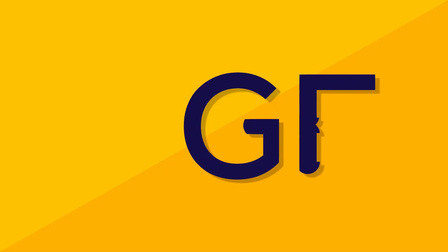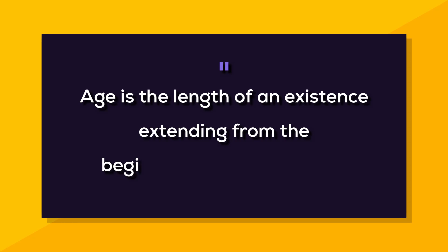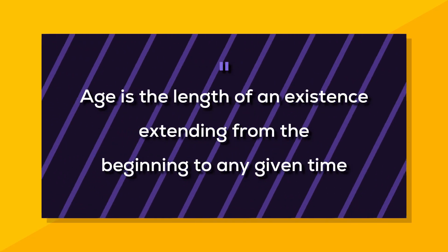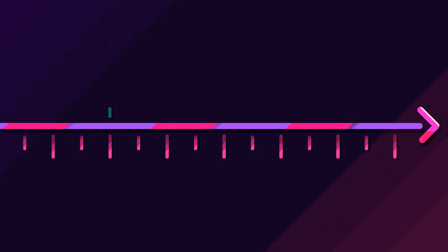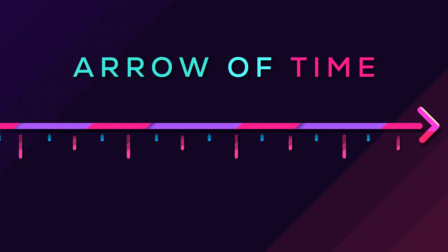First of all, what is age? Age is the length of an existence extending from the beginning to any given time. Let's try to understand this. Age is the distance between two given points in a timeline. A timeline is a representation of the flow of time.